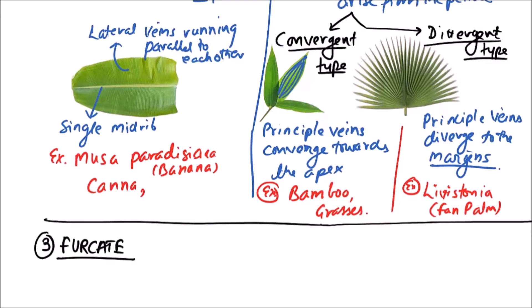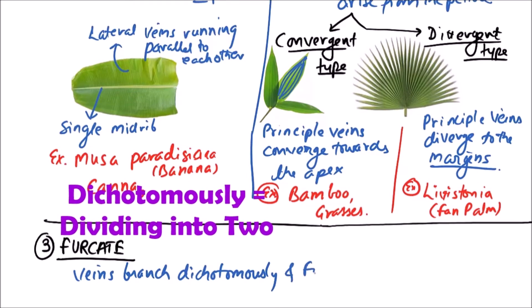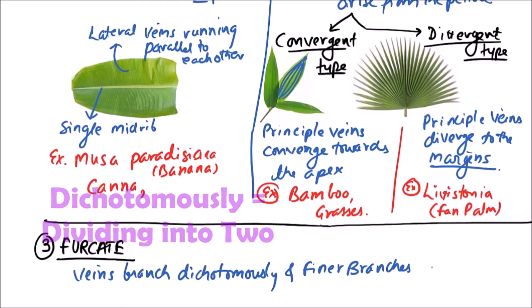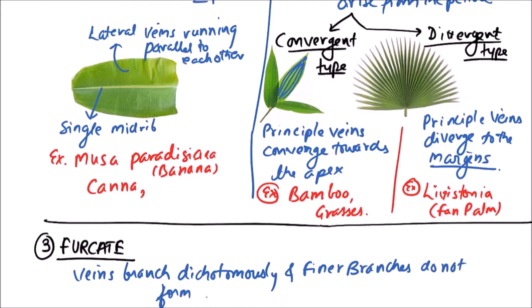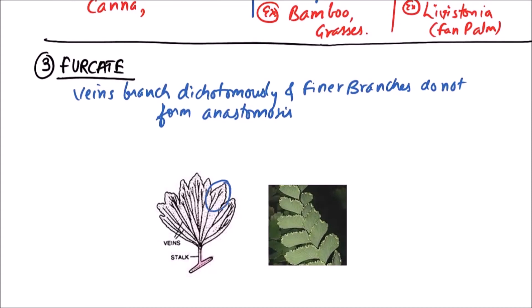In furcate venation, veins branch dichotomously and finer branches do not form anastomosis or any type of reticulum. We can easily observe the dichotomously branching here and here.